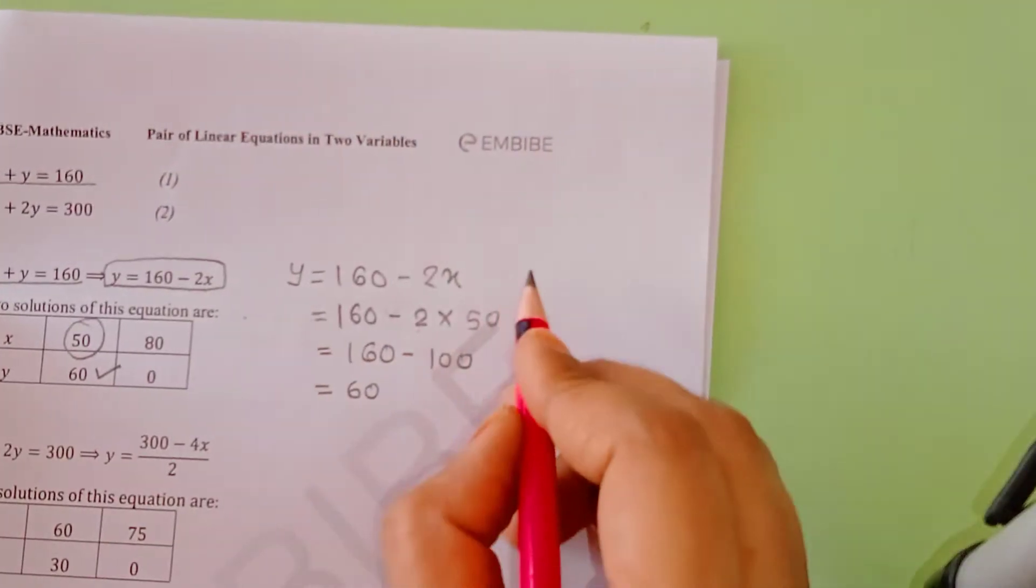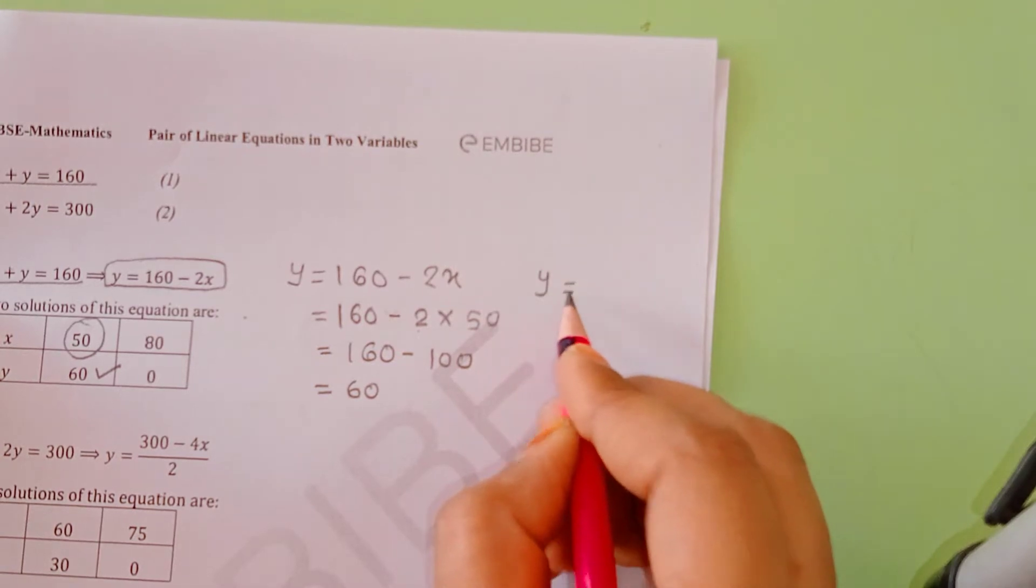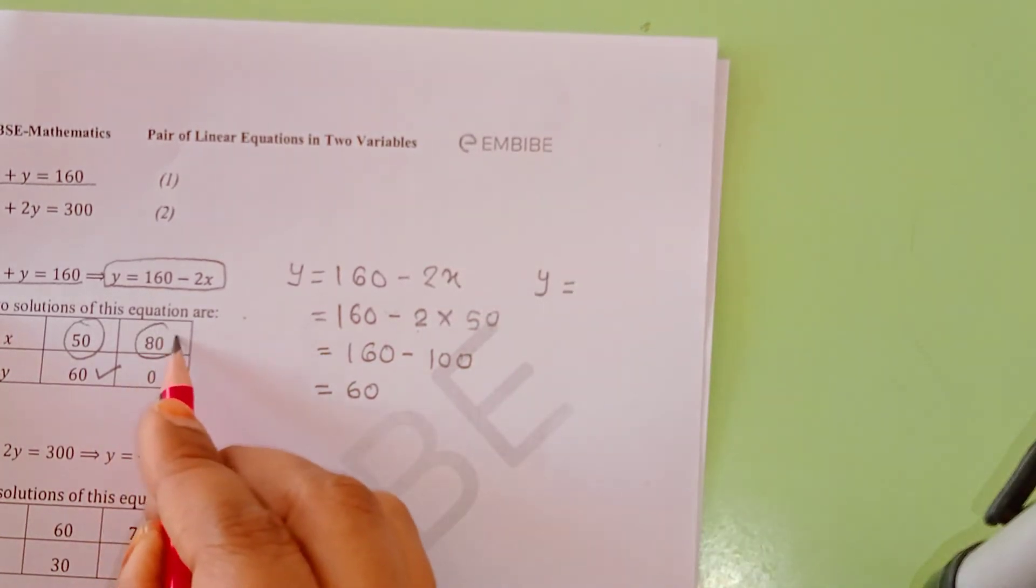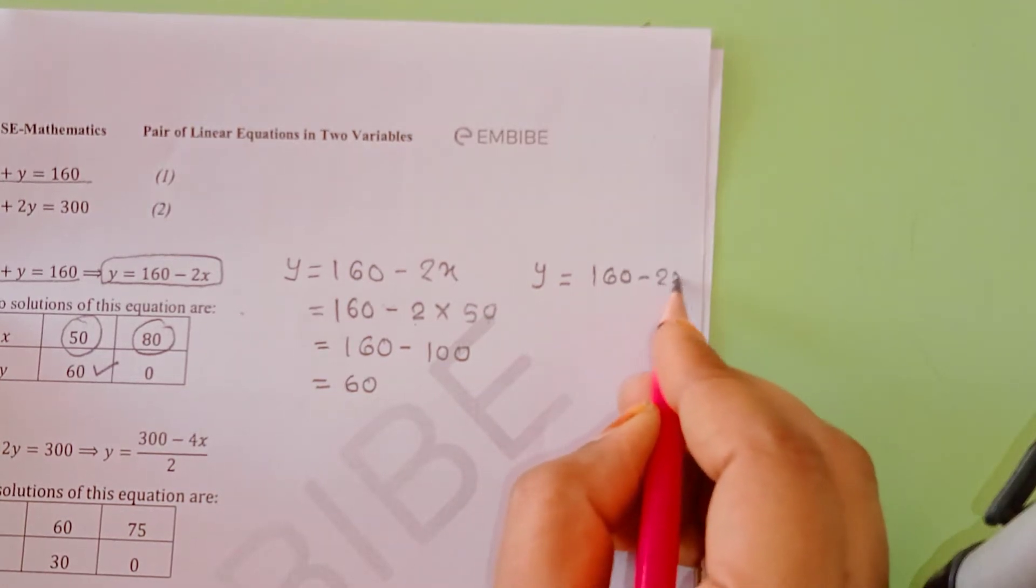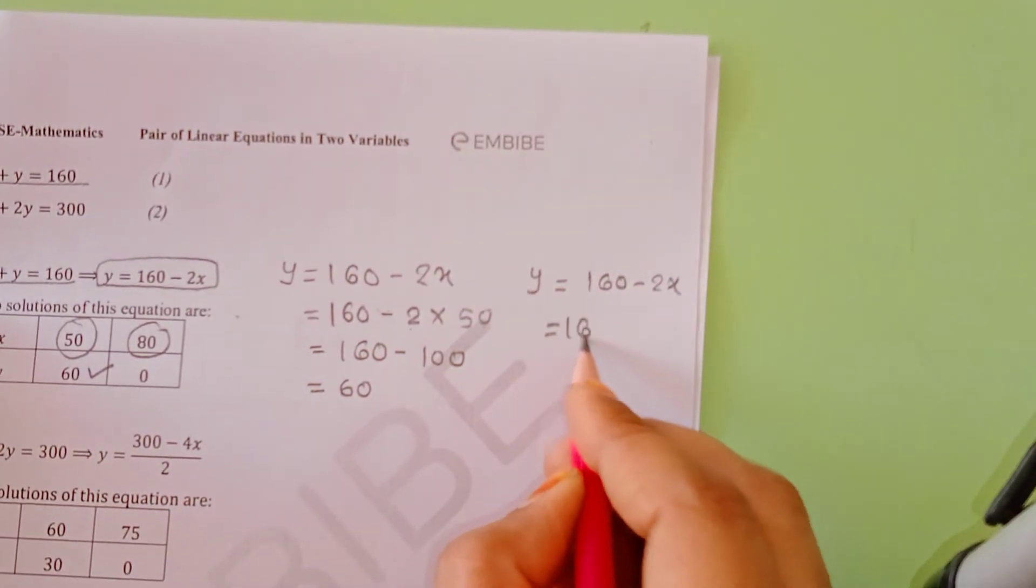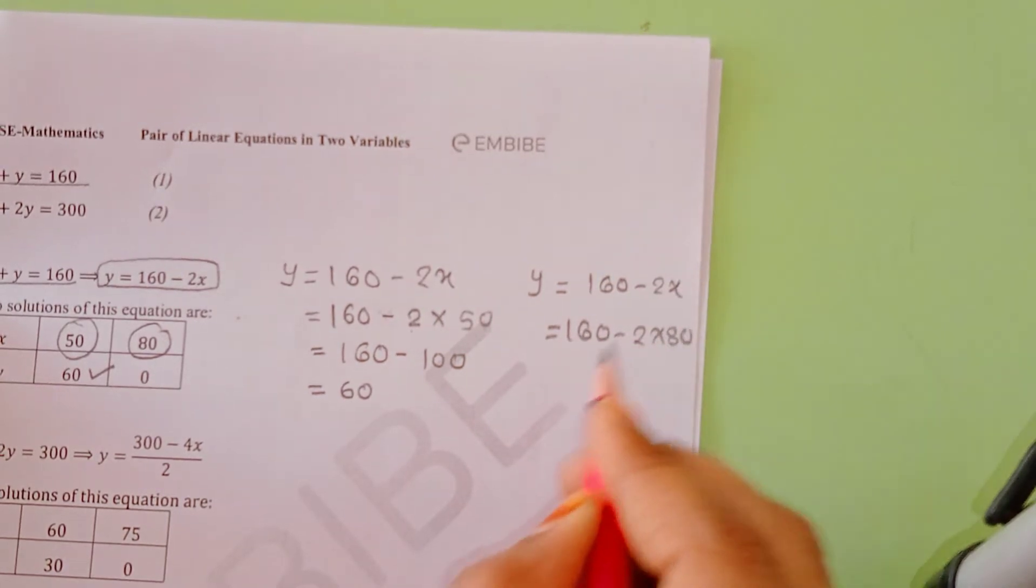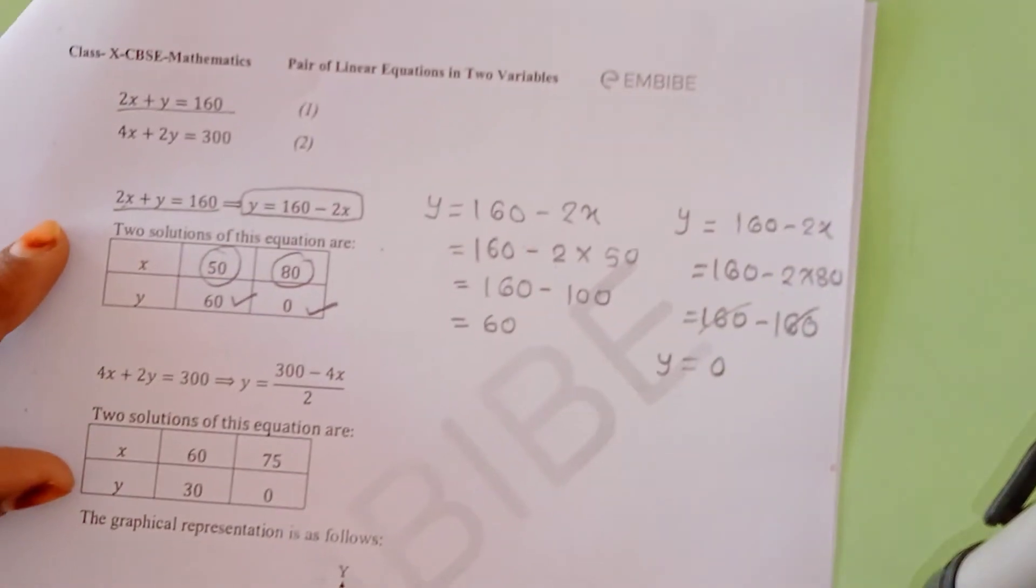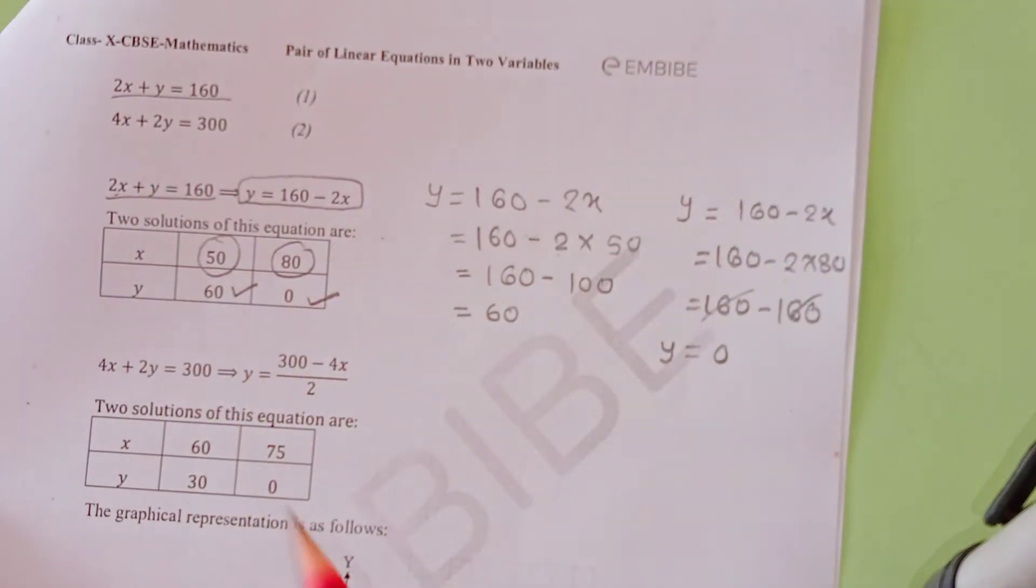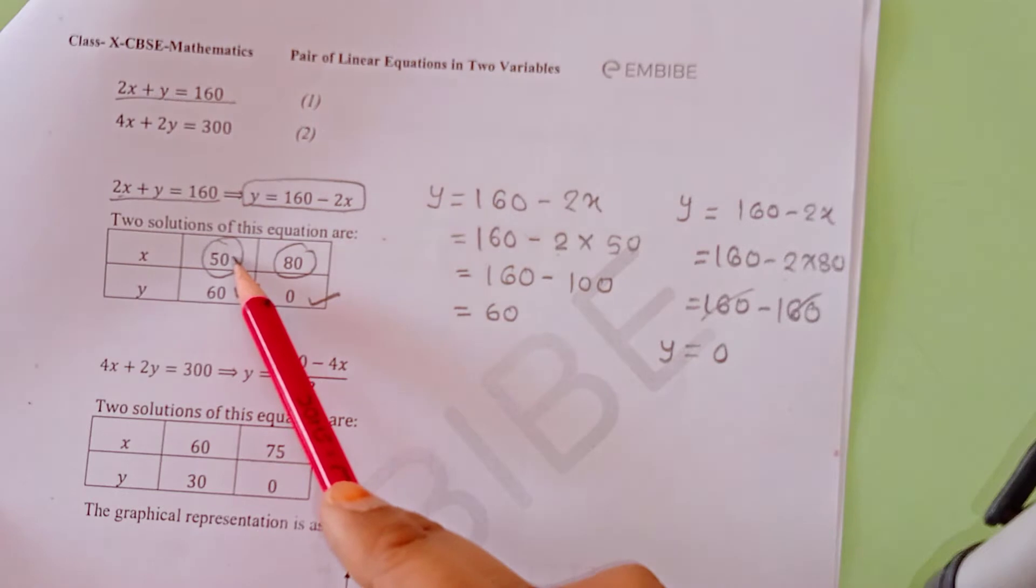When we put the value of x equal to 80, same way: y = 160 - 2x = 160 - 2(80) = 160 - 160 = 0. So we get the value of y equal to 0.